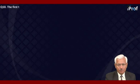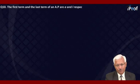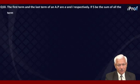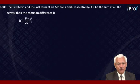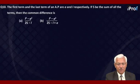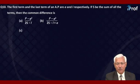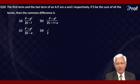The first term and the last term of an AP are A and L respectively. If S is the sum of all the terms, then the common difference is — the options are: L squared minus A squared divided by 2S minus L; L squared minus A squared divided by 2S minus L plus A; L squared minus A squared divided by 2S minus A; or L squared minus S squared divided by 2S minus A minus L.